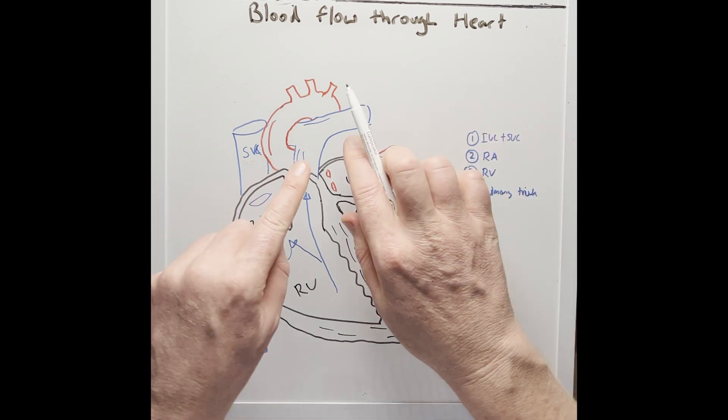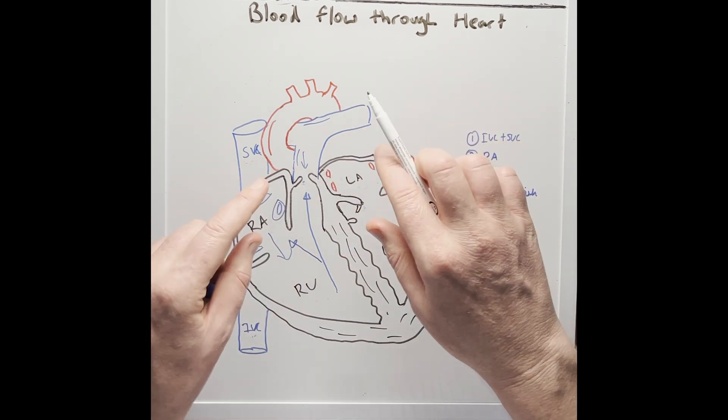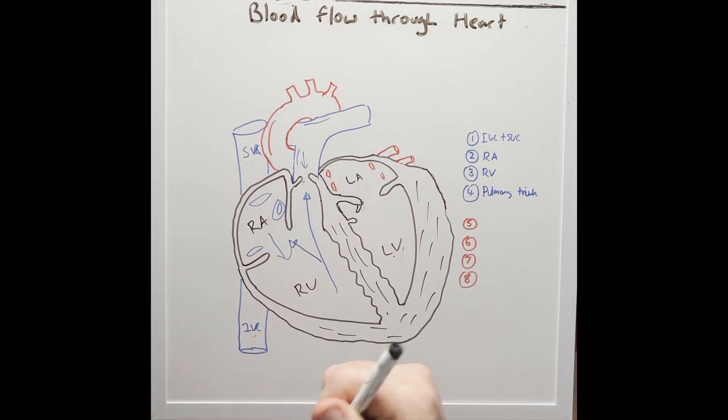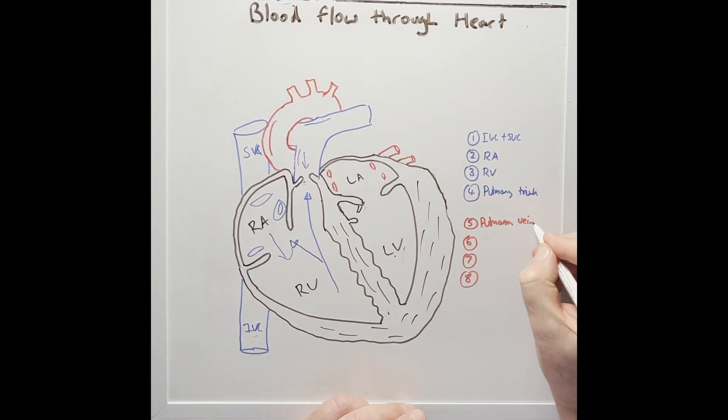So blood via the pulmonary arteries is taken to the lungs and is now oxygenated. The blood then returns from the lungs, oxygenated, so now we're in red, via the pulmonary veins. And there are two on each side. Blood then pools within the left atrium.